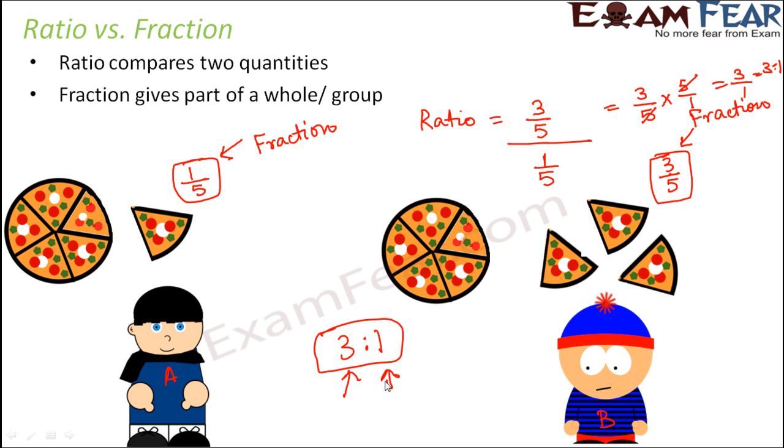But here, when you say three is to one, three is to one is not one number. Three is to one determines where three tells you the amount eaten by B and one tells you the amount eaten by A. These are not exact amounts, but they give you an idea about how much A and B eat respectively. This is how ratio is different from a fraction.